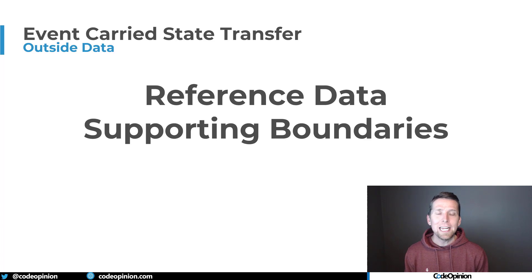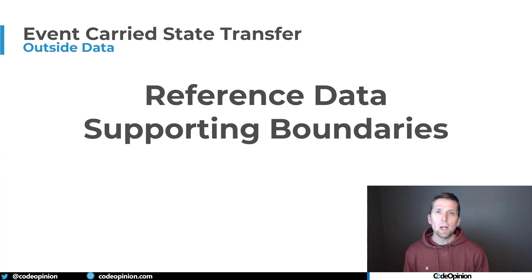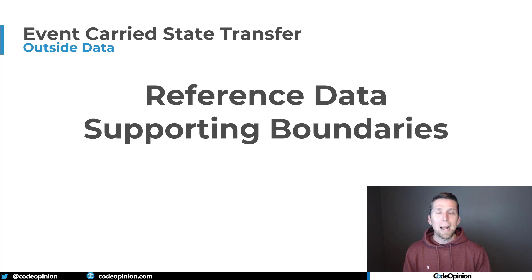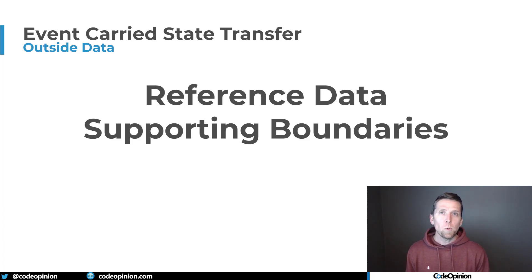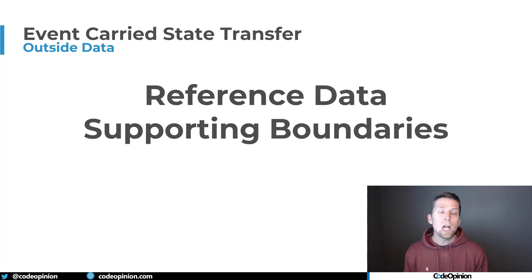So what type of data would you want to keep in a local cache from other service boundaries? At the core of a system is transactional data, and that transactional data usually needs reference data. That reference data comes from boundaries that are in a supporting role — they manage and own that type of data. Also, reference data in these supporting roles usually doesn't change that often, so in terms of dealing with staleness, it's really not that much of a concern because it's not changing that much to begin with.